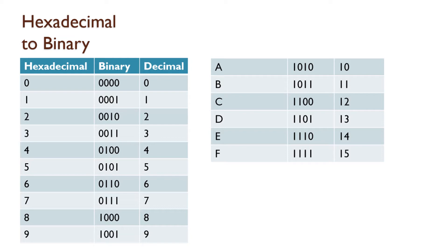Now let's discuss the hexadecimal to binary table from 0 to 15. The shortcut method — the binary pattern repeats: 0, 1, 10, 11, 100, 101, 110, 111, 1000, and so on. This shortcut method is easy to learn. The table covers 0 to 15, a total of 16 values, and the base value of hexadecimal is 16.